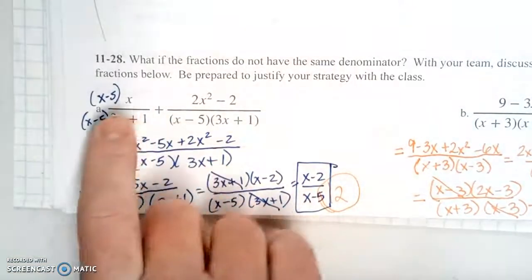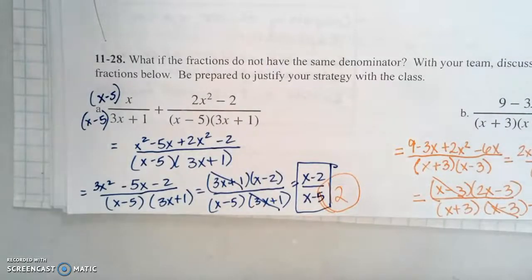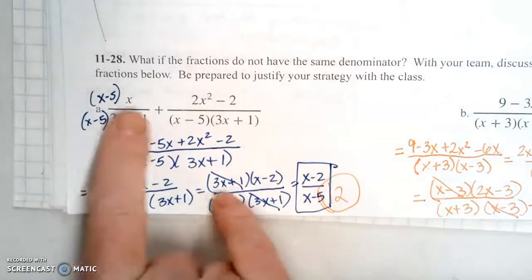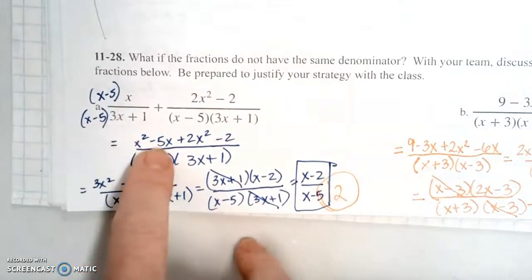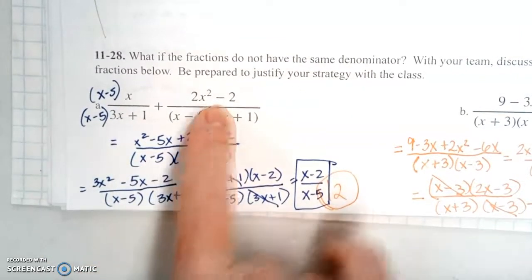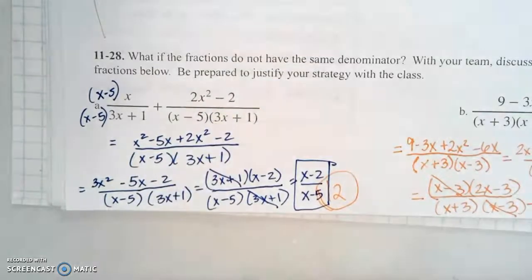The second expression or second fraction, just leave it for right now. So if we multiply x times x minus 5, we're going to get x squared minus 5x. Add that numerator of the second expression and put it over the common denominator. Then we're going to simplify.